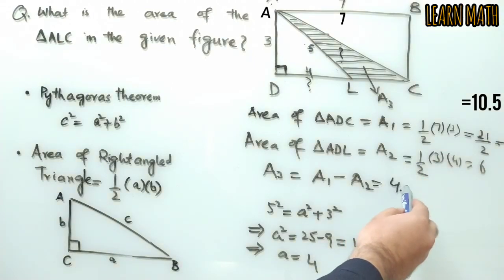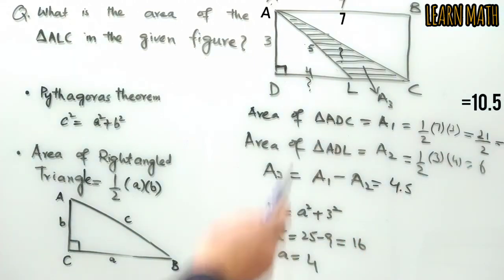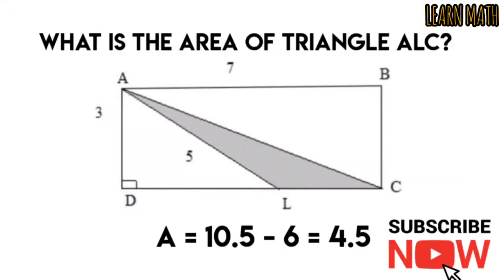Now what will be the area of this triangle? 10.5 minus 6 equals 4.5. So the area of this triangle is 4.5. Like the video, share it, and don't forget to subscribe to my channel. Thank you.